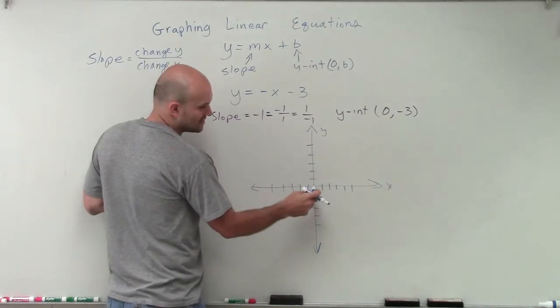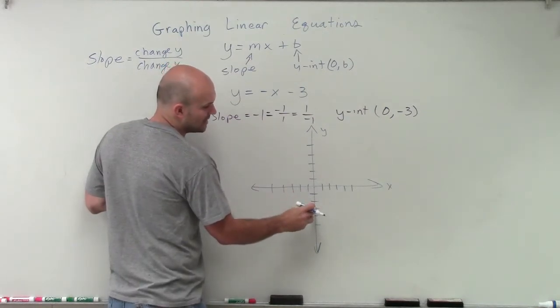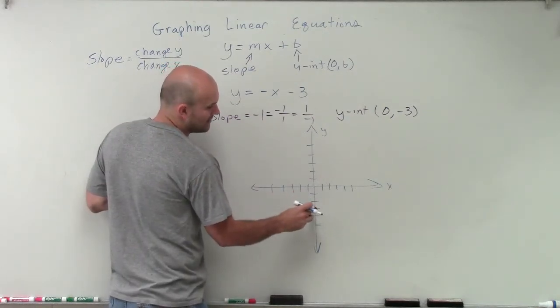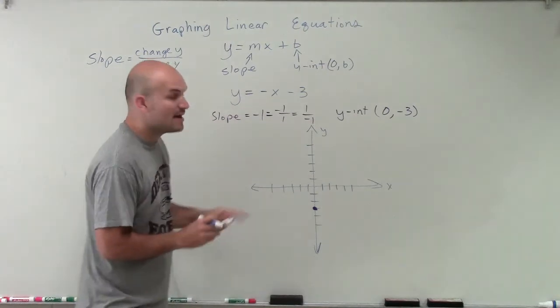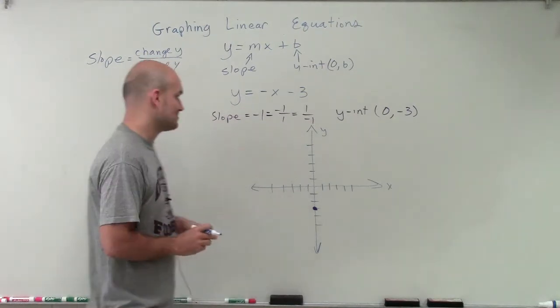So 0 comma negative 3 is going to go down 3 — 1, 2, 3 — on the y-axis. That's my y-intercept.